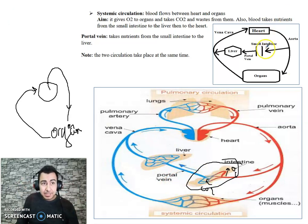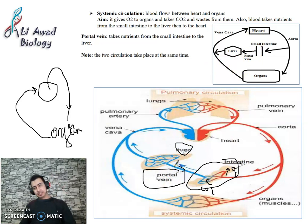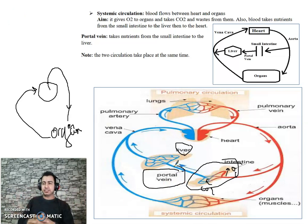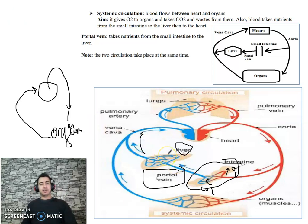The blood goes to the liver through a vein called portal vein or hepatic portal vein. Hepatic means liver, so this vein takes blood to the liver, then from the liver to the vena cava.